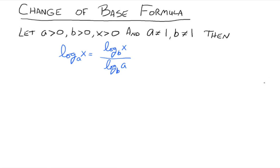Let A be greater than 0, B be greater than 0, X be greater than 0. But we also want to make sure A is not 1 and B is not 1. Then, the log base A of X is equal to log base B of X, so we're taking the logarithm of the same argument that we were to begin with, just with a new base. And all of that is divided by a logarithm, base B again, and taking the logarithm of your old base.